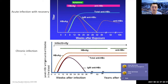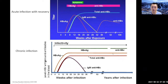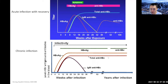To contrast the two scenarios: the person with recovery has core antibody positive (exposed) and surface antibody positive (immune), but no surface antigen, meaning they cleared the infection. Whereas the person with chronic infection has core antibody positive (exposed), surface antigen positive (chronic infection), but no surface antibody — no immunity. So: core means exposure, surface antigen means infection, surface antibody means immunity. I know sometimes that can be a little bit confusing — we'll revisit that one more time in the next slide.